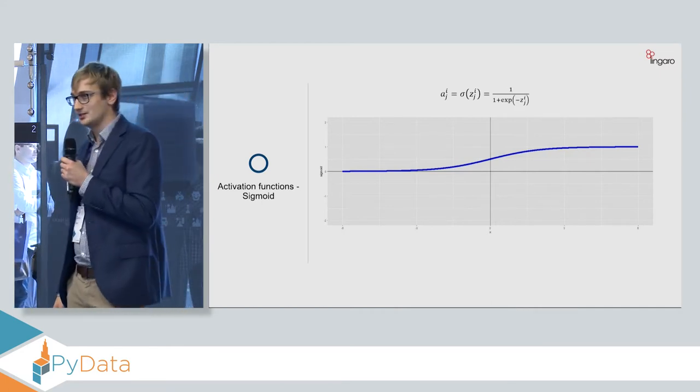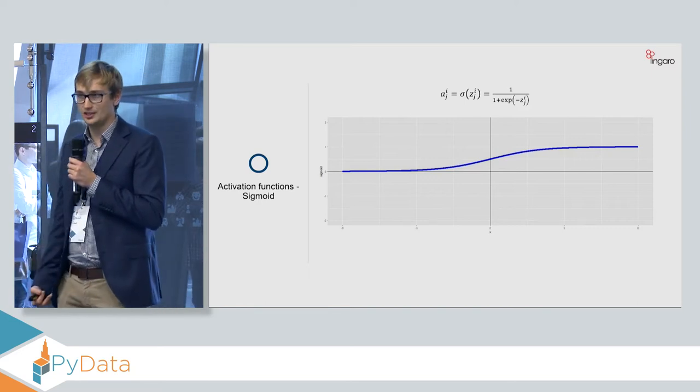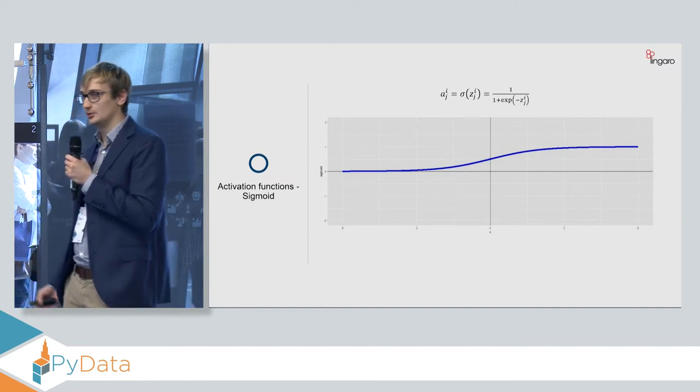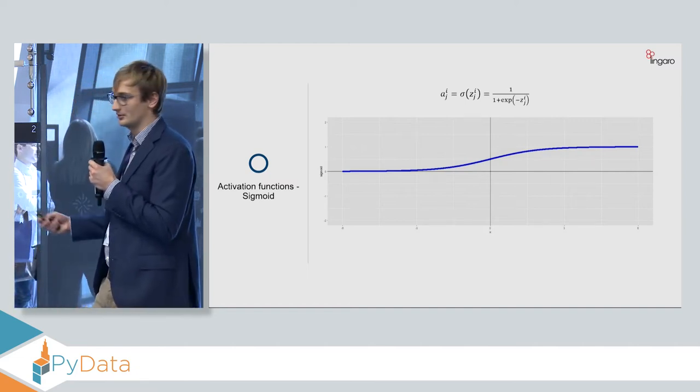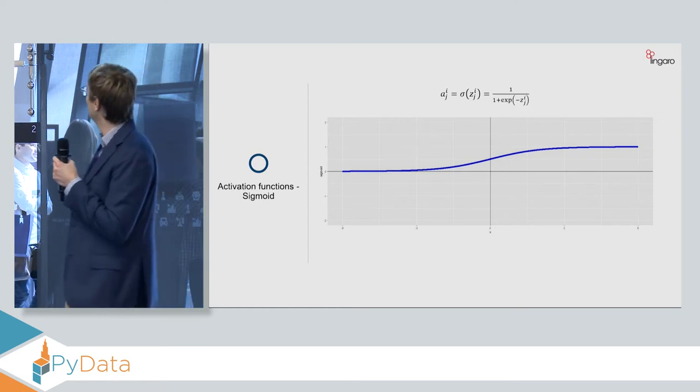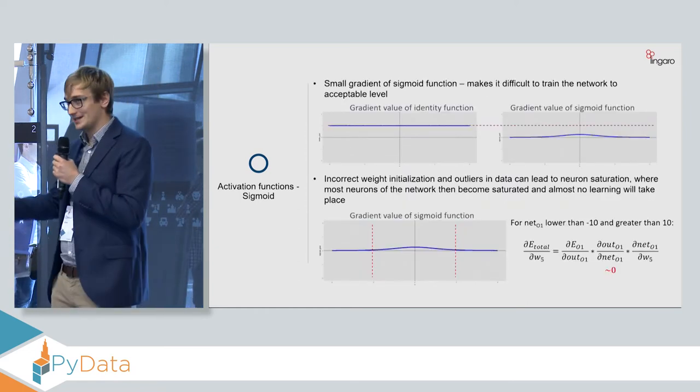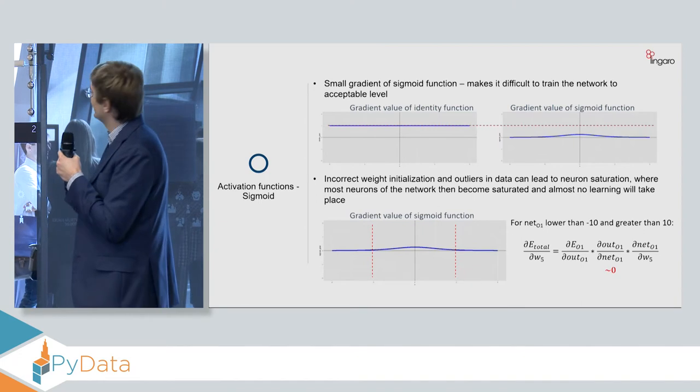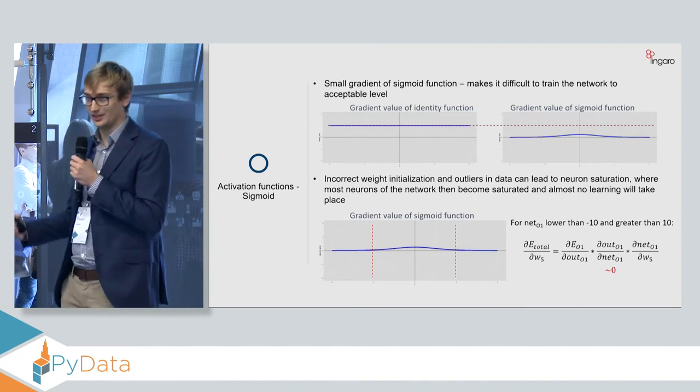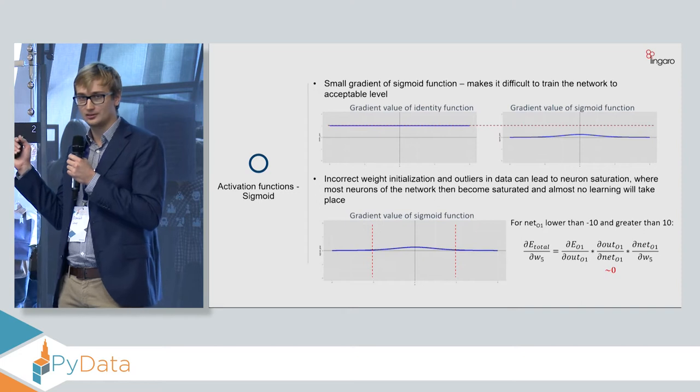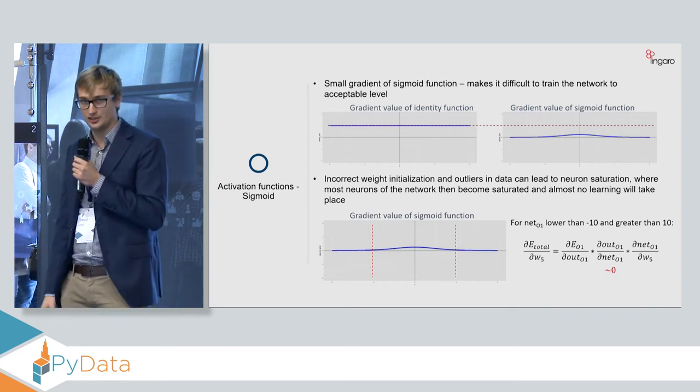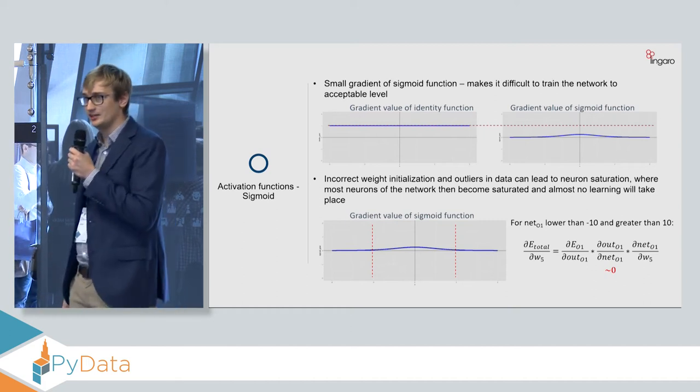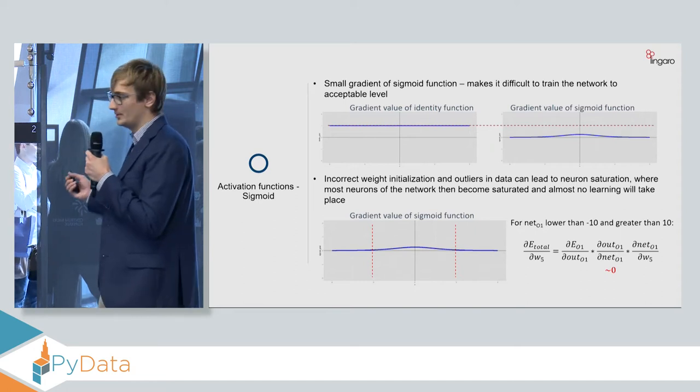But the function that actually started the whole neural network revolution, the sigmoid function, it's a function that has a nice interpretation in terms of probability, because it's from 0 to 1. It also has the analogy to brain, because it either activates or not, like our neurons in the brain. But as it was the beginning of this whole history, it has a lot of disadvantages. Like for example, it has pretty small gradient value.